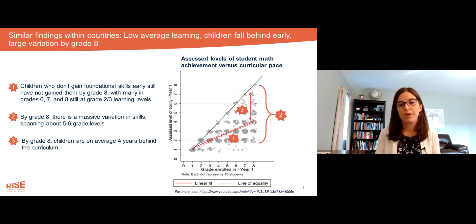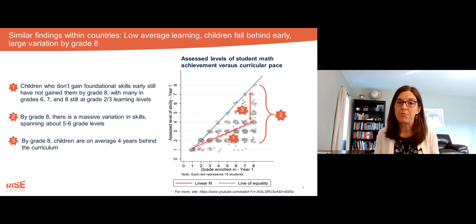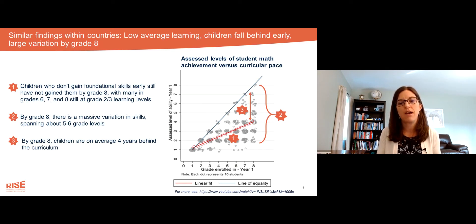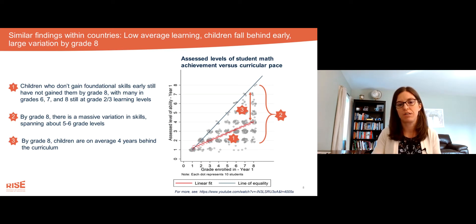If children were keeping pace with the curricular expectations, the red line would overlap with the blue line. As you can see, instead, in every grade past grade one, children are far behind the expectations.